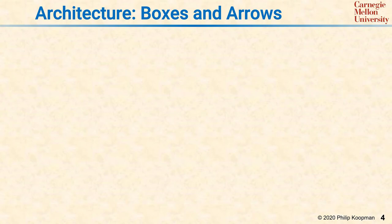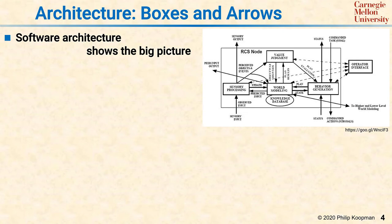Architectures tend to be represented as boxes and arrows diagrams. The point of a software architecture diagram is to show the big picture to orient people doing more detailed designs.